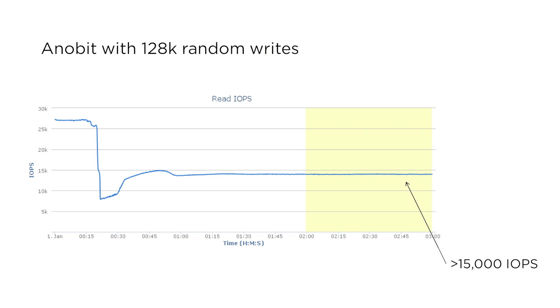Looking at this, you might ask why it is that XtremeIO decided to go with a location-addressed model — why XtremeIO isn't using a garbage collection process at the system level. The secret here is the drive that was originally used. There was a company called Anabit and they made an incredible SSD. Even with 128K random writes — one profile that would kill a normal drive — the read performance and latency profile of those drives was amazing. With a drive like this, why bother doing a log-structured design at all?